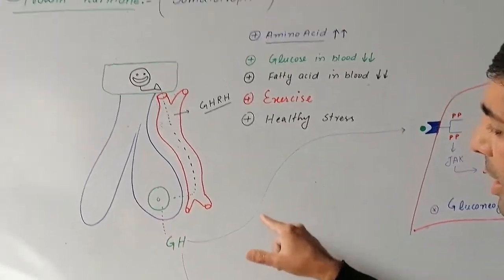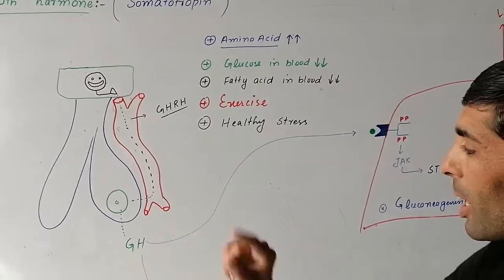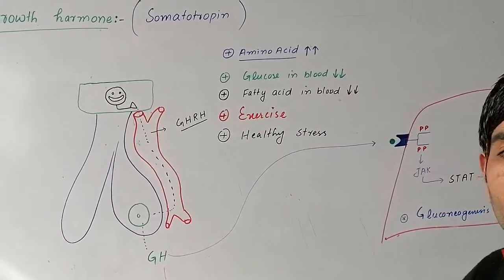We discuss the direct cycle involving growth hormone, trophic hormone, and the effects on FSH and LH.